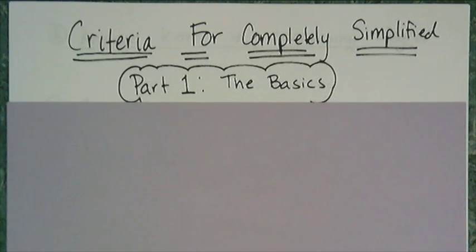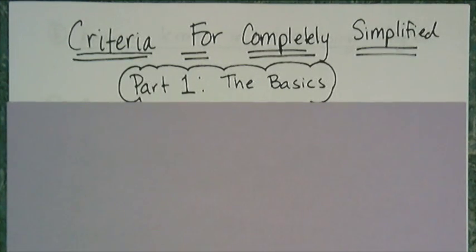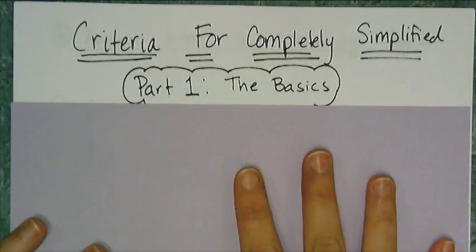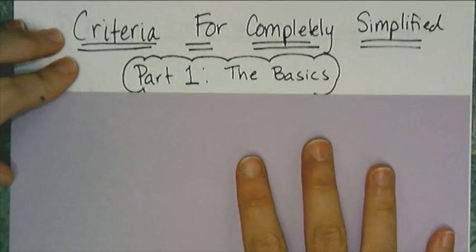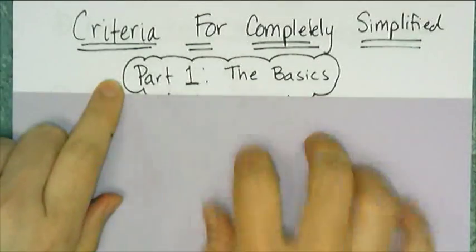Later when we study exponential functions, we'll learn about how to write an exponential expression that's fully simplified. When we do quadratics, we'll talk about polynomials and simplified radical form. But to start, we're focusing on things we need for linear expressions and equations, and how their answers need to be formatted.